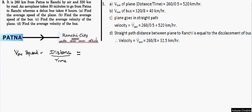The distance from Patna to Ranchi by air is 260 kilometers — that is our distance for the plane. By road it is 320 kilometers. An aeroplane takes 30 minutes, whereas the bus takes 8 hours. For the plane, since it's a flight, the distance and displacement will be the same, so we take 260 kilometers.